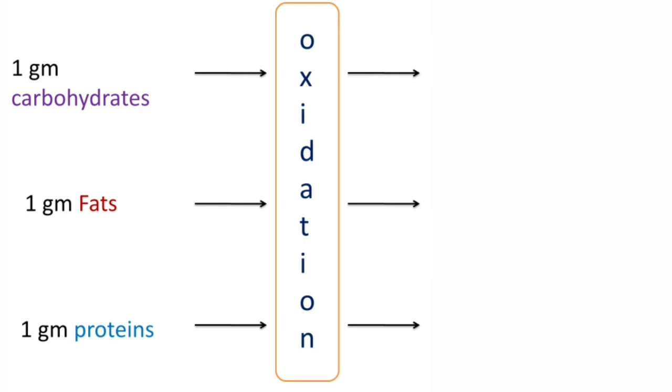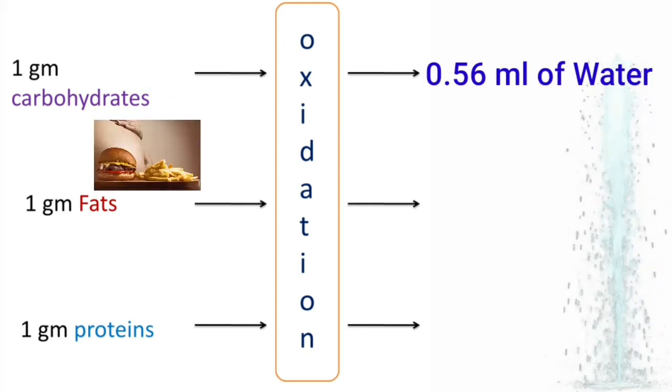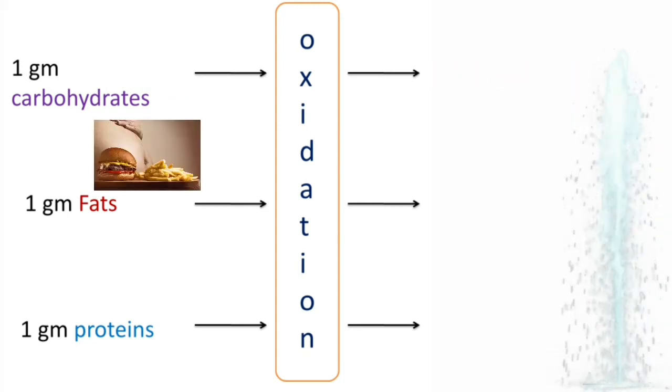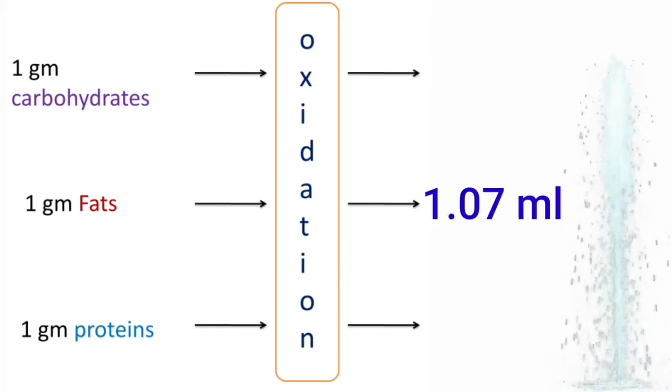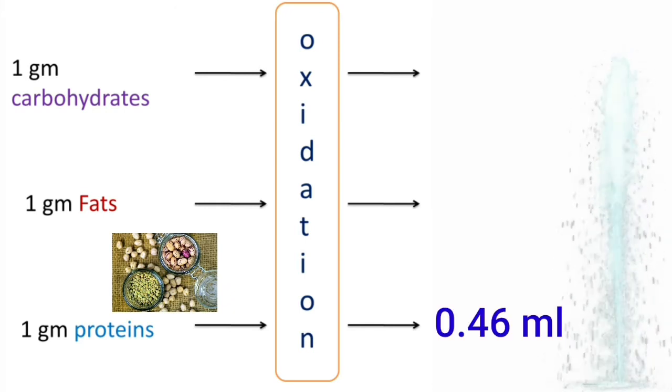Coming to the amount of water produced from the oxidation of foodstuffs: 1 gram of carbohydrates on oxidation produces 0.56 ml of water, 1 gram of fats on oxidation produces 1.07 ml of water, and 1 gram of proteins on oxidation produces 0.46 ml of water.